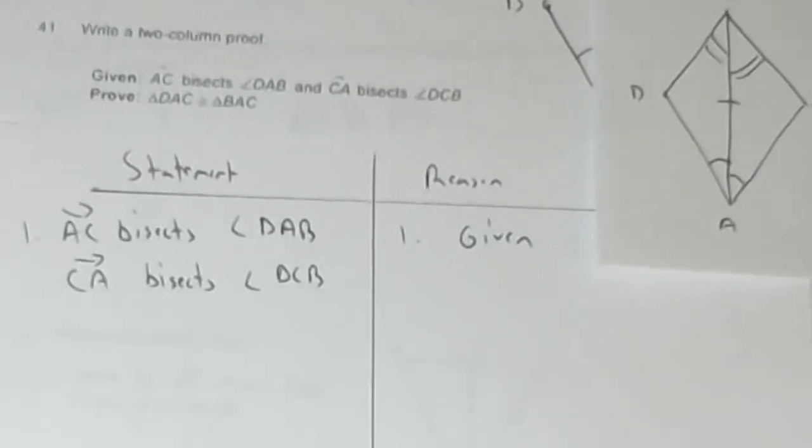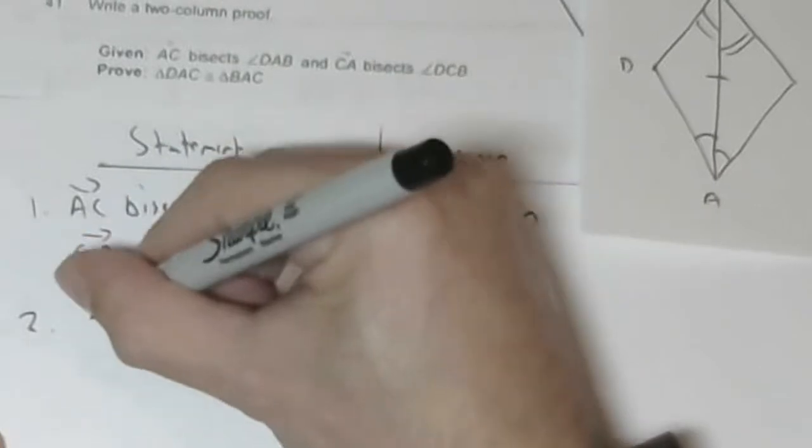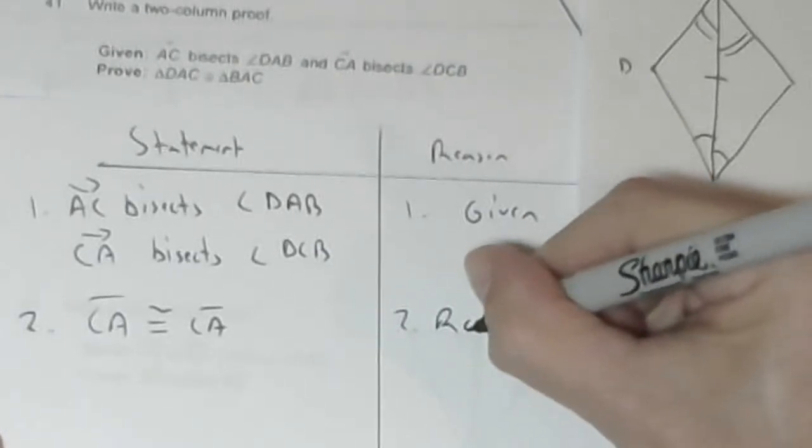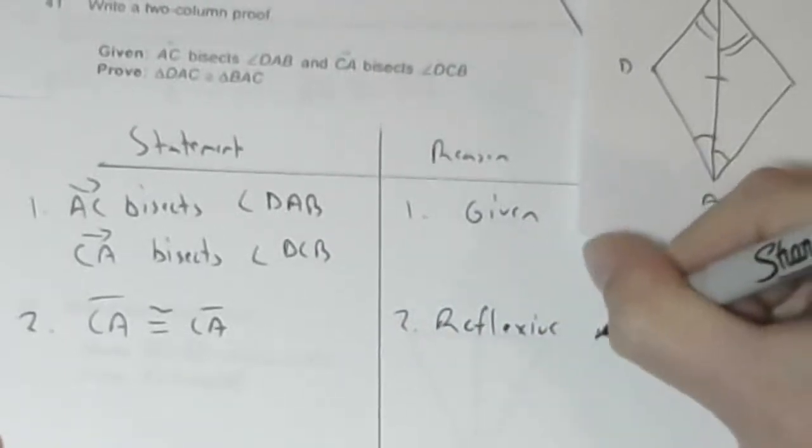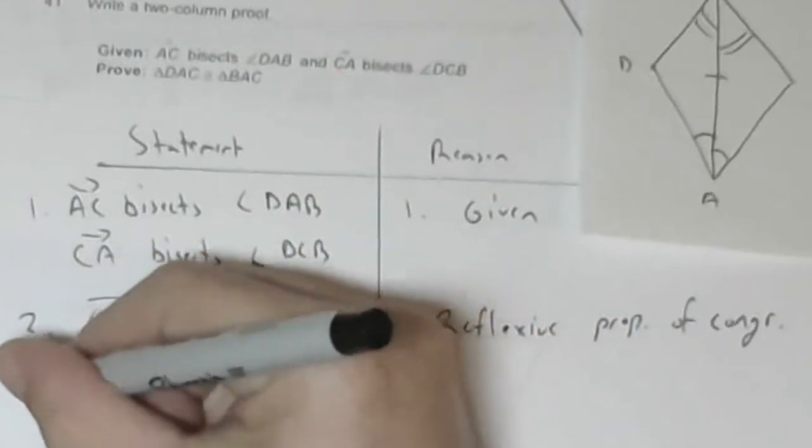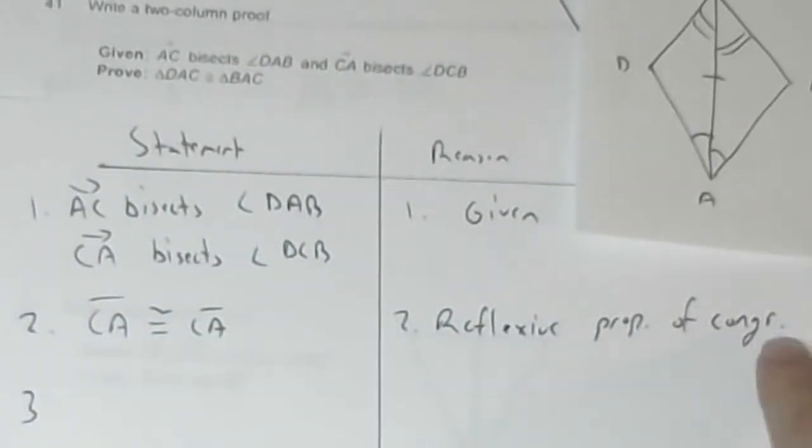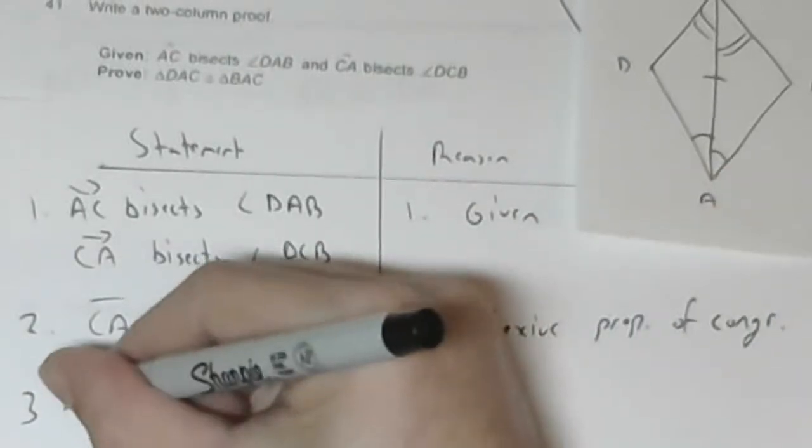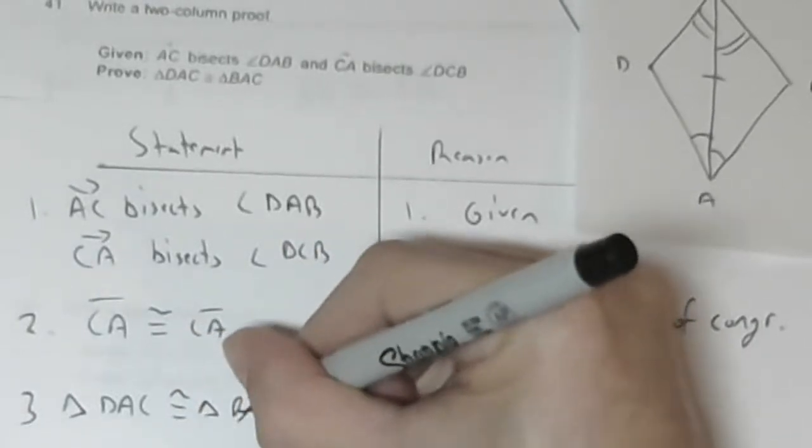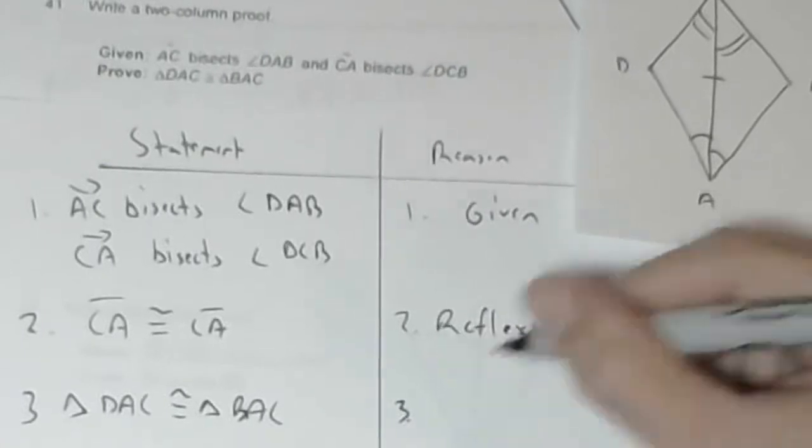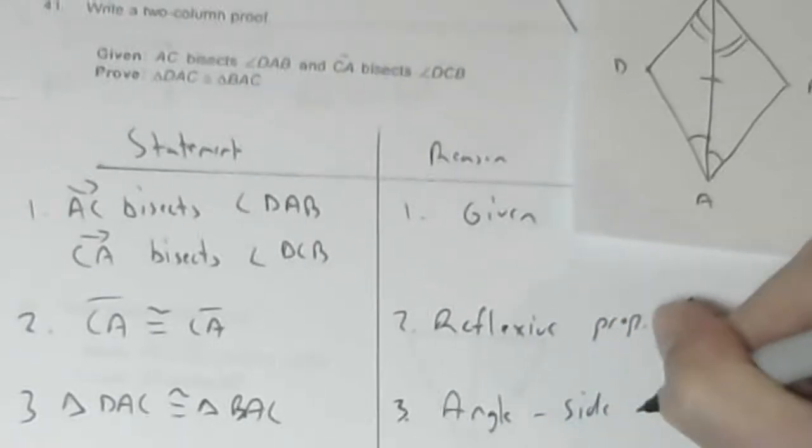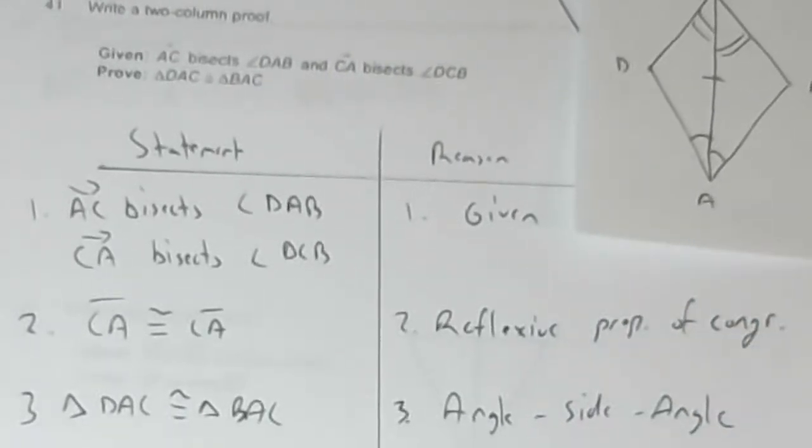Sorry that was all off camera. What's going on is that I have line AC. I'm going to draw somewhere above. AC bisects DAB. And CA, okay here we go. So this angle is equal to this angle. This angle is equal to this angle. Alright. Now the reason one is given. And then really what I'm going to do is I'm going to say this side is equal to itself, and then I'm going to prove the triangles congruent by side angle side.